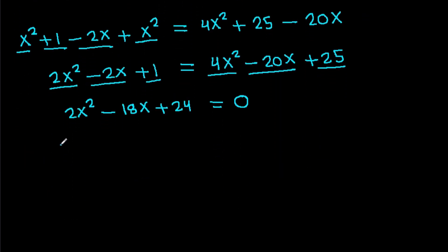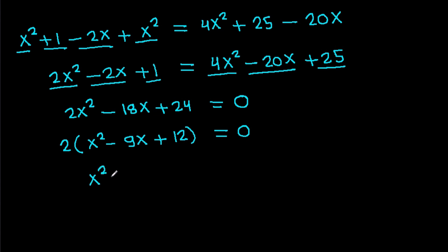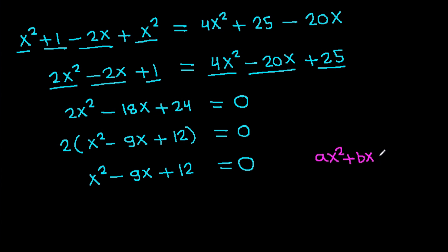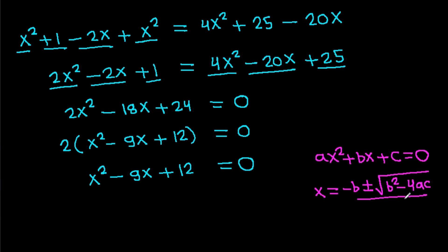Expanding: X² minus 2X plus 1 plus X² equals 4X² minus 20X plus 25. This simplifies to 2X² minus 2X plus 1 equals 4X² minus 20X plus 25. Rearranging gives 2X² minus 18X plus 24 equals 0. Dividing by 2: X² minus 9X plus 12 equals 0.